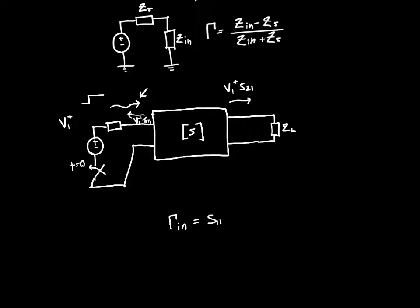So the amplitude of the wave after it leaves this port on the output side is just going to be V1 plus times S21. And then it travels along and it hits the load, and it gets reflected with value gamma L. So its new value is V1 plus times gamma L times S21.